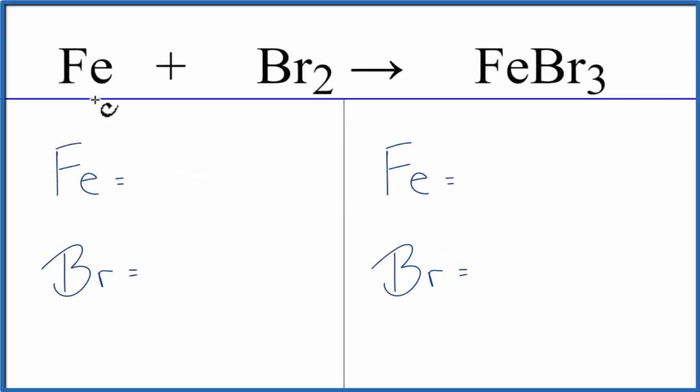In this video, we'll balance the equation for Fe plus Br2 yields FeBr3. That's iron plus bromine gas gives us iron 3-bromide. Let's count the atoms up on each side of the equation.